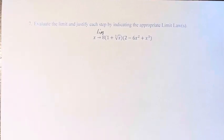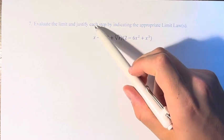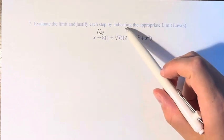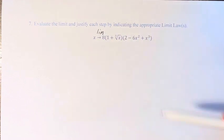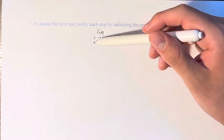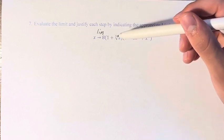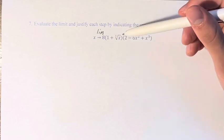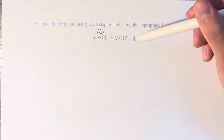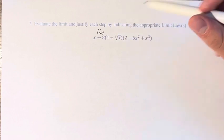Hello and welcome back to another video. In this problem, we're asked to evaluate the limit and justify each step by indicating the appropriate limit laws. We have the limit as x approaches 8 of 1 plus the cube root of x, times 2 minus 6x squared plus x cubed.